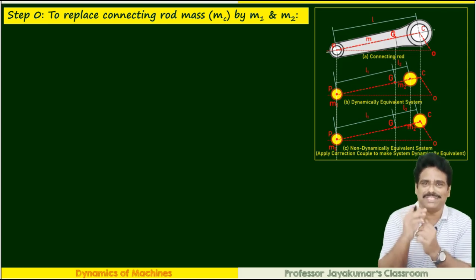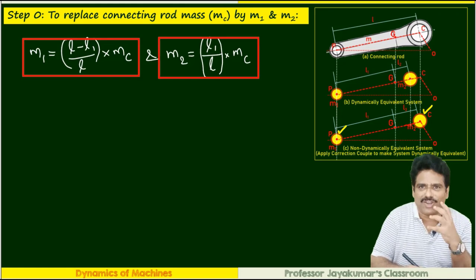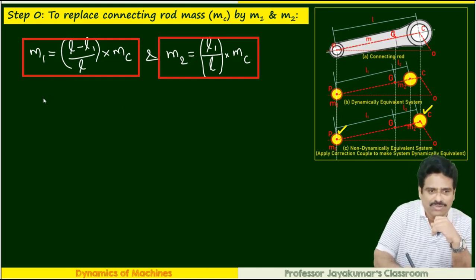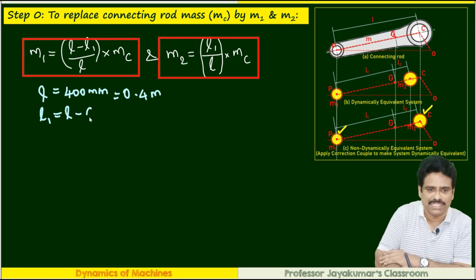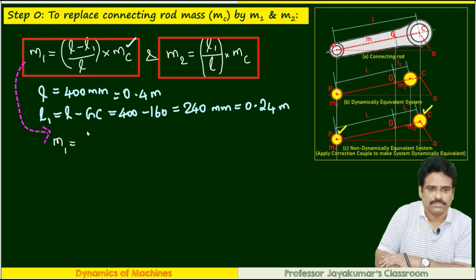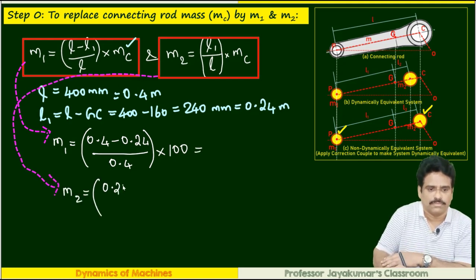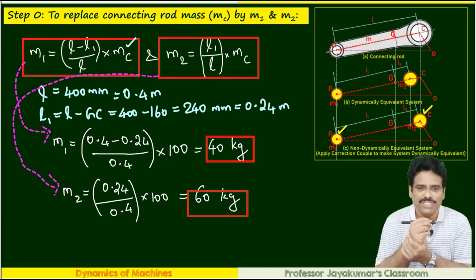Step 0: replace mass of the connecting rod by two point masses m1 and m2. L = 400 mm = 0.4 m. L1 = L − gc = 400 − 160 = 240 mm. mc = 100 kg. Substituting in the formulas, we get m1 = 40 kg and m2 = 60 kg.